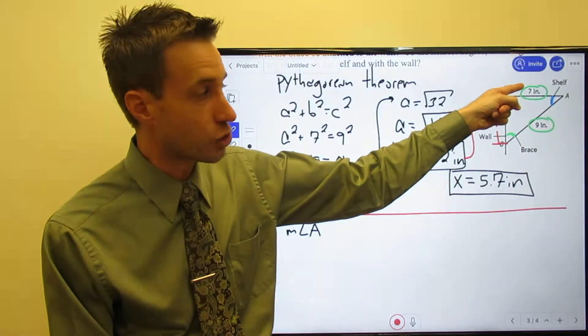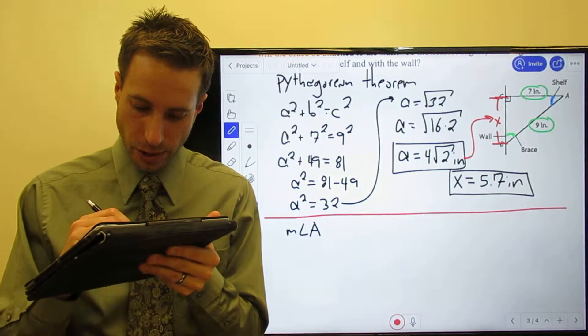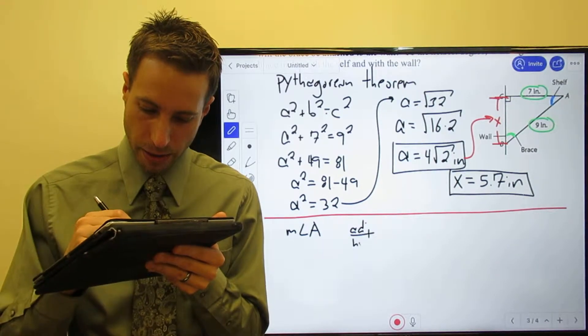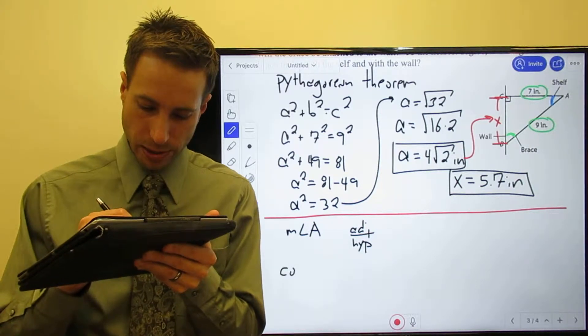If this is angle A, that means 7 is adjacent and 9 is the hypotenuse. So adjacent and hypotenuse - sure enough, that is cosine.